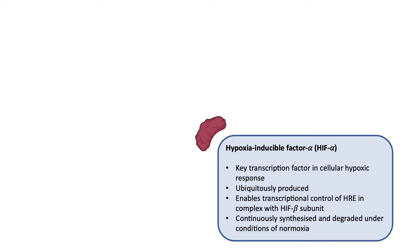HIF-alpha is a transcription factor that is ubiquitously produced, meaning that it is found in nearly all cells. HIF-alpha enables the transcriptional control of hypoxia-response elements, or HREs, which are sequences found in gene promoters that direct the transcription of genes involved in hypoxia response. This transcriptional control of HIF-alpha occurs in complex with another subunit called HIF-beta.